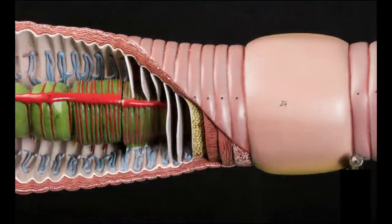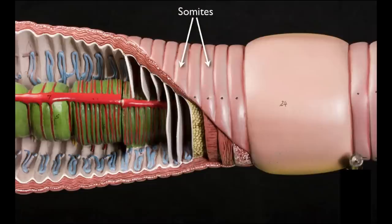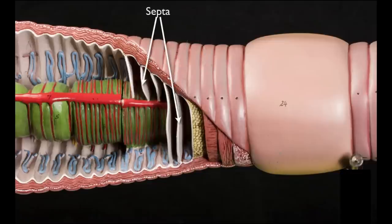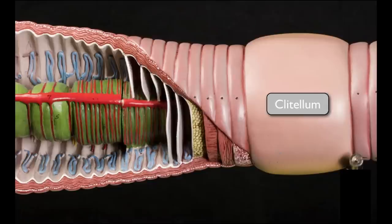Now let's look at the model again from a different perspective. Notice once again the metanephridia — there are two in each body segment. Body segments are called somites. These segments are not merely lines on the body surface; the coelom is separated into compartments by septa, thin membranes that create watertight compartments. Also notice the clitellum — this structure secretes the mucus needed for copulation and the subsequent formation of the cocoon, where fertilization and embryonic development take place.